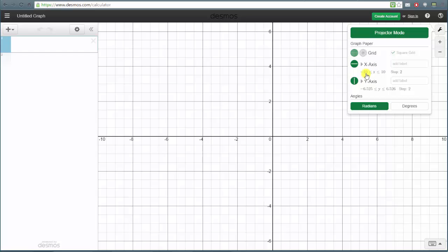Notice below is where we can also change the scaling on the x and y axes. Let's exit the settings by clicking on the wrench again or just clicking on the coordinate plane.